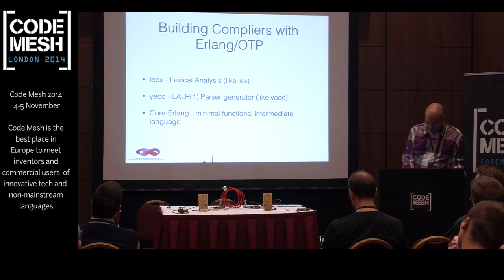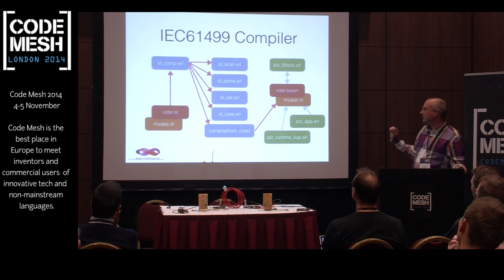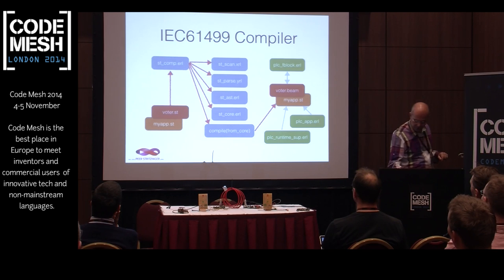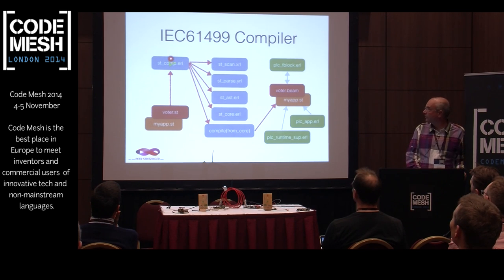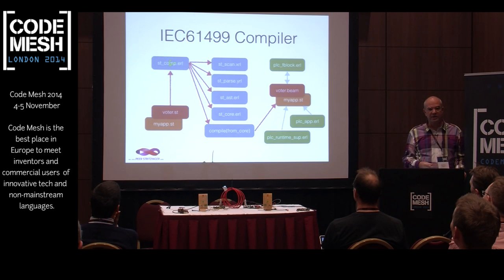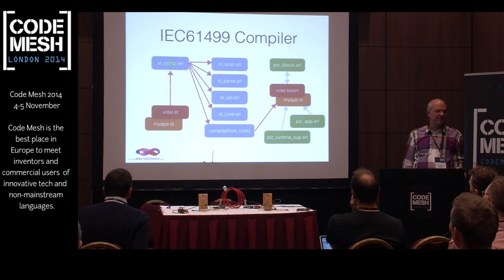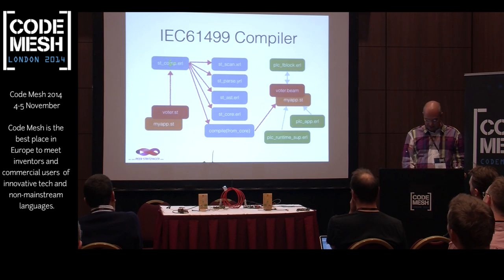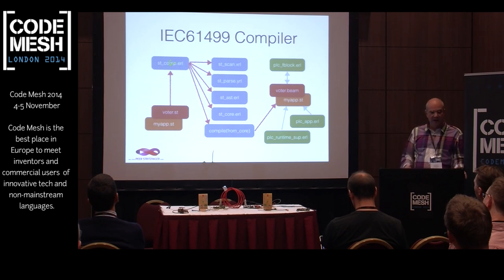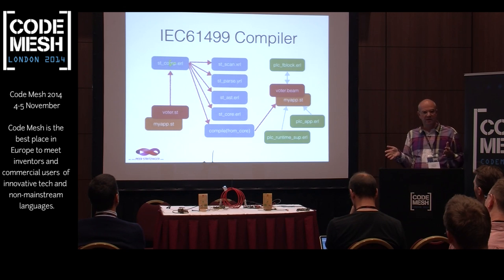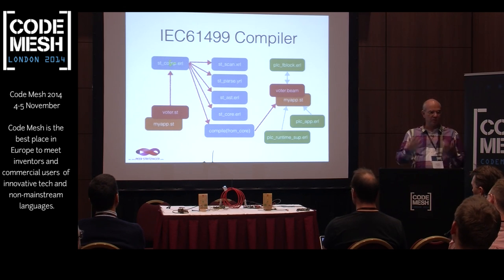Let's look at the compiler structure. On the left there's the compiler driver, then the parsers — first we scan, then we parse using the generated scanner and parser. Then we have a bunch of small passes over the abstract syntax tree transforming things, and then I produce Core Erlang. At the end I just call the Erlang compiler's compile-from-core function. You can normally just produce the Core Erlang syntax tree, but because it has an actual text syntax you can also print it and look at it.